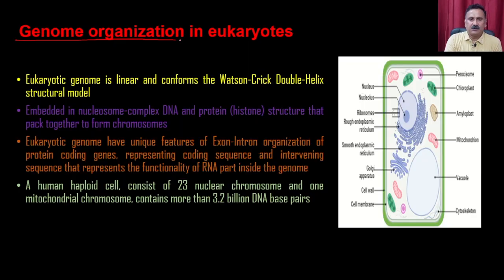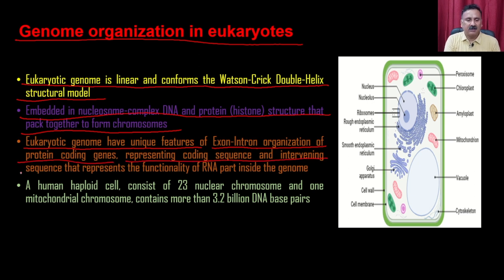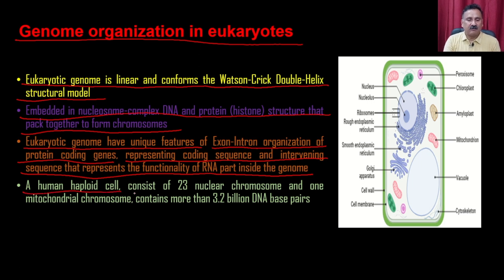The eukaryotic genome is linear and organized in a nucleosome complex — a DNA and protein structure packed together to form chromosomes. It features an exon-intron organization of protein-coding genes. A human haploid cell consists of 23 chromosomes plus one mitochondrial chromosome, containing more than 3.2 billion base pairs. This large amount of DNA requires a higher level of compaction to fit into the small nucleus.